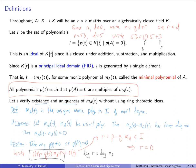One quick corollary: the minimal polynomial of A must divide the characteristic polynomial, because by the Cayley-Hamilton theorem from the previous lecture, the characteristic polynomial vanishes on A.